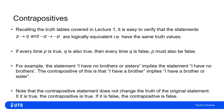When working out contrapositives, make sure you haven't changed the information in the statement. If the original statement is true, the contrapositive should also be true; if the original is false, the contrapositive should also be false. You shouldn't find that a true statement becomes false — or the other way around — after forming its contrapositive.